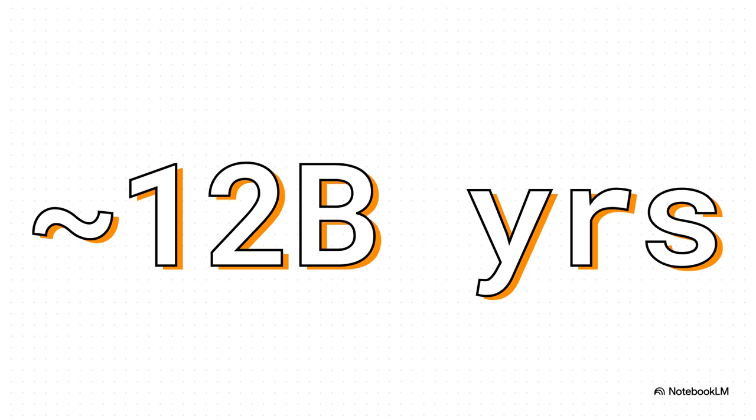Let's take a second to wrap our heads around the numbers here. We're talking about light from the Cliff that has been traveling for almost 12 billion years to get to us. That means we're seeing this thing not as it is today, but as it was only 1.8 billion years after the Big Bang. It's like looking through a cosmic time machine deep into the universe's baby pictures.